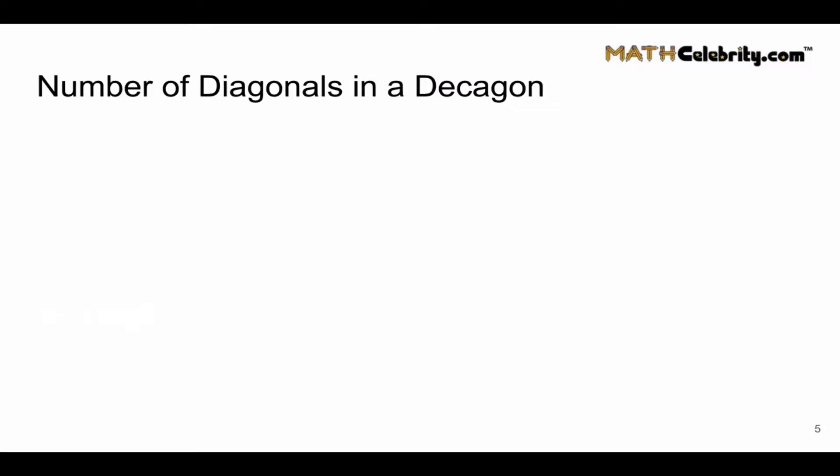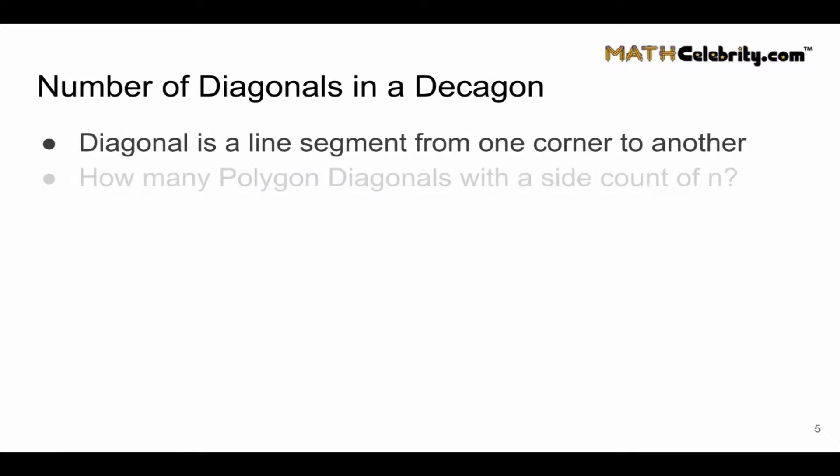How about the number of diagonals in a Decagon? A diagonal is a line segment drawn from one corner to another. And we want to know how many polygon diagonals with a side count of n.